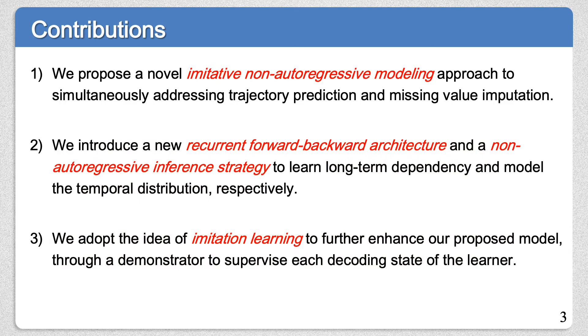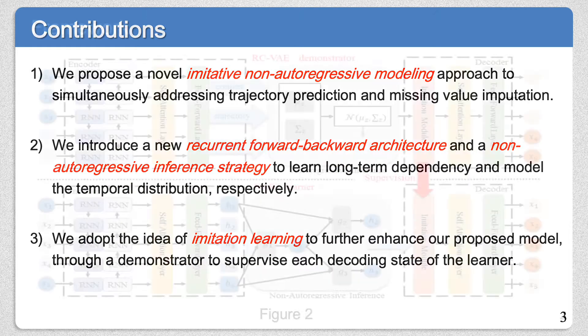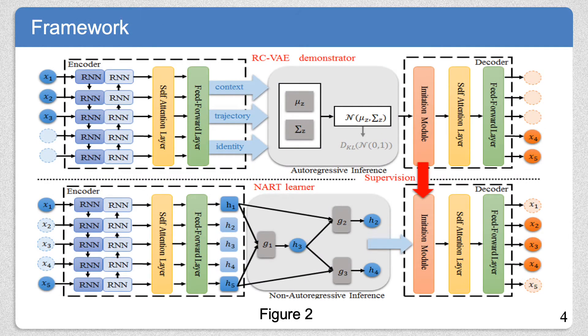Here we summarize the main contributions in our paper. Our proposed model mainly consists of two parts. The upper part is the RCVE demonstrator for predicting the future, and the bottom part is the NART learner to impute the missing values. We also introduce the imitation module to enable the RCVE demonstrator to supervise the NART learner during the decoding process.